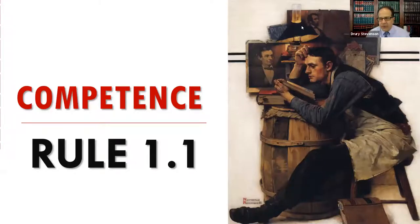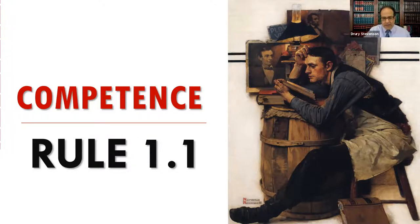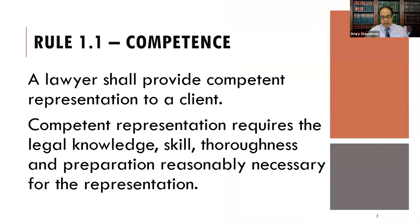This is a lecture for professional responsibility. We're going to be talking about ABA Model Rule 1.1, which is about competence, or some states may have it phrased in the negative as a rule against incompetence. A lawyer shall provide competent representation to a client.